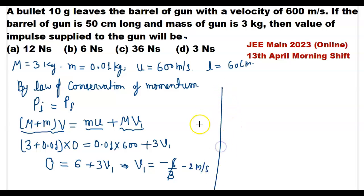Now we need to calculate the impulse supplied to the gun. We know that impulse is equal to change in momentum, so impulse supplied to the gun will be equal to change in momentum.